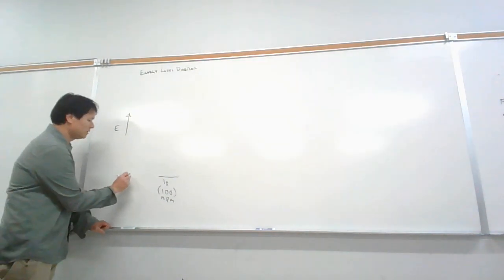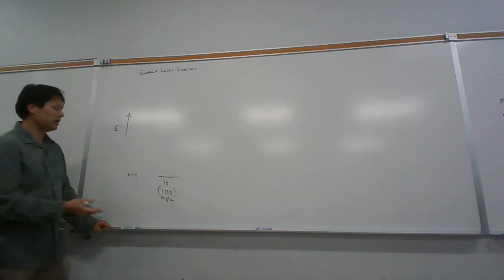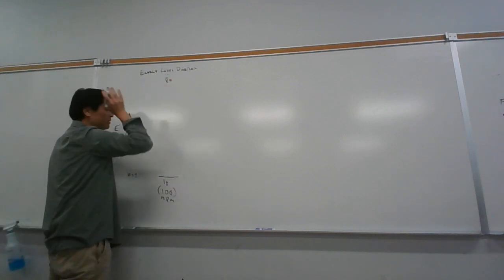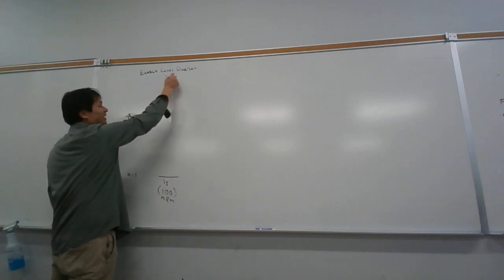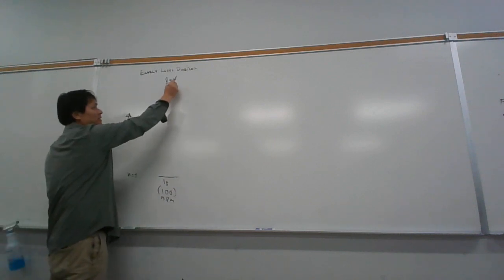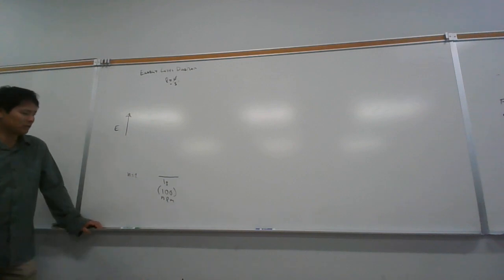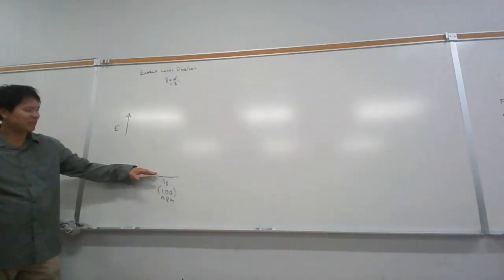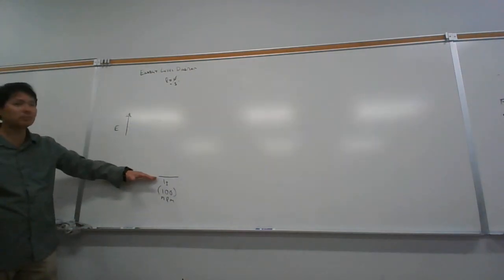So when n equals 1, what are the possible l values? The possible l values are all l values up to a max of n minus 1. Well, 1 minus 1 is 0, so l can only equal 0. And l equals 0 we call s - it's the s orbital. So this would be the lowest energy orbital. In quantum mechanics, we want to pinpoint the energy, so an energy level diagram is very important.